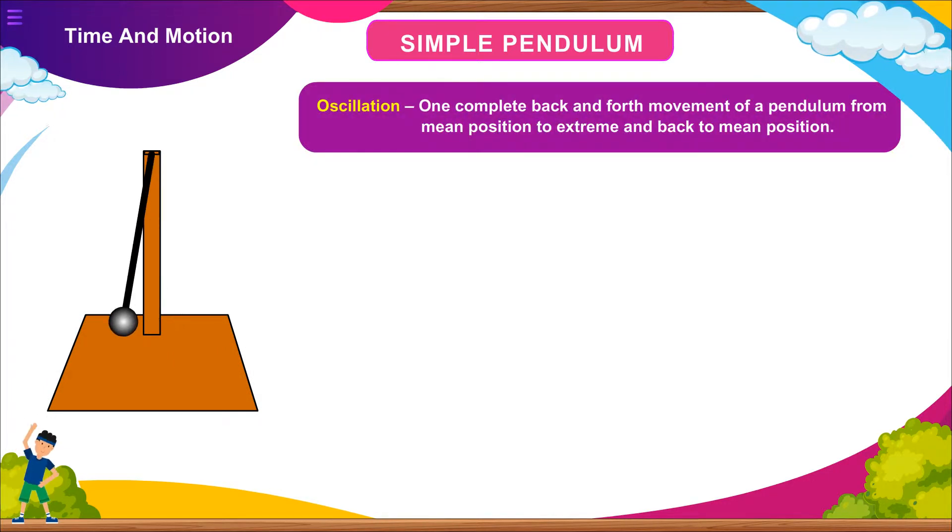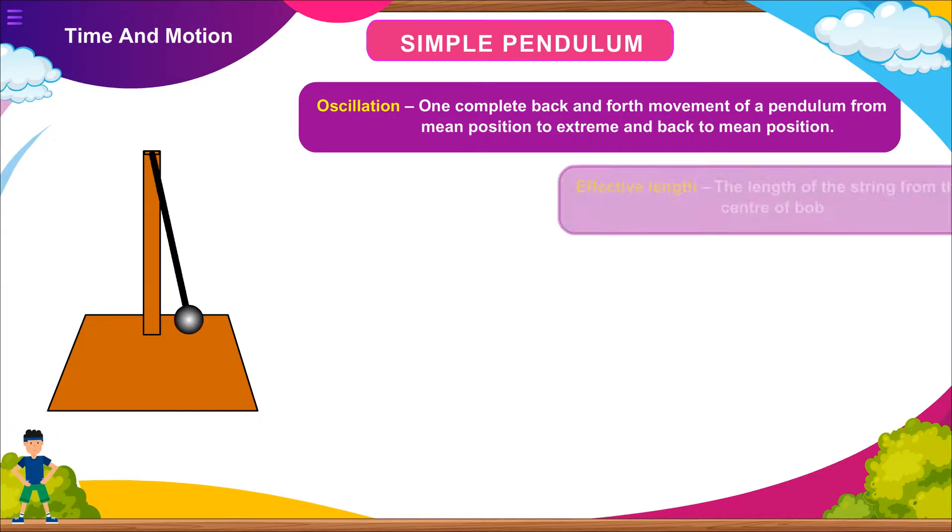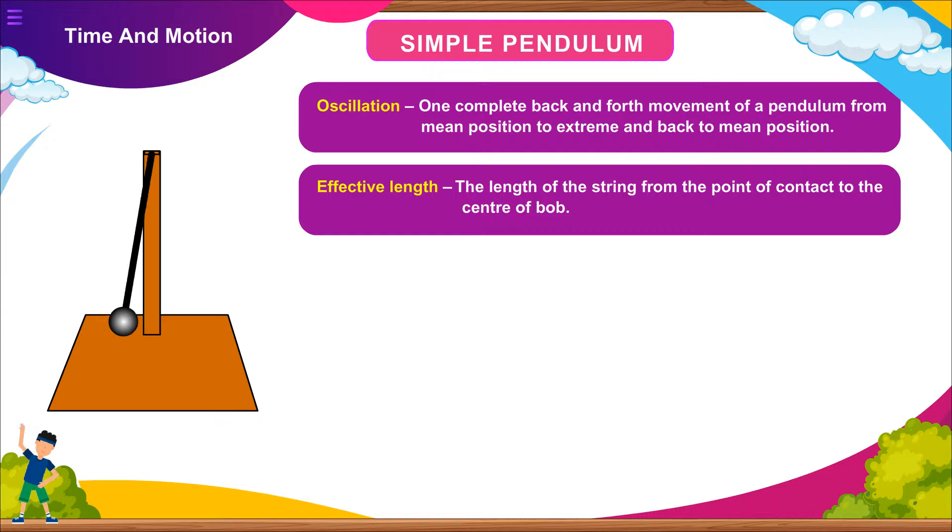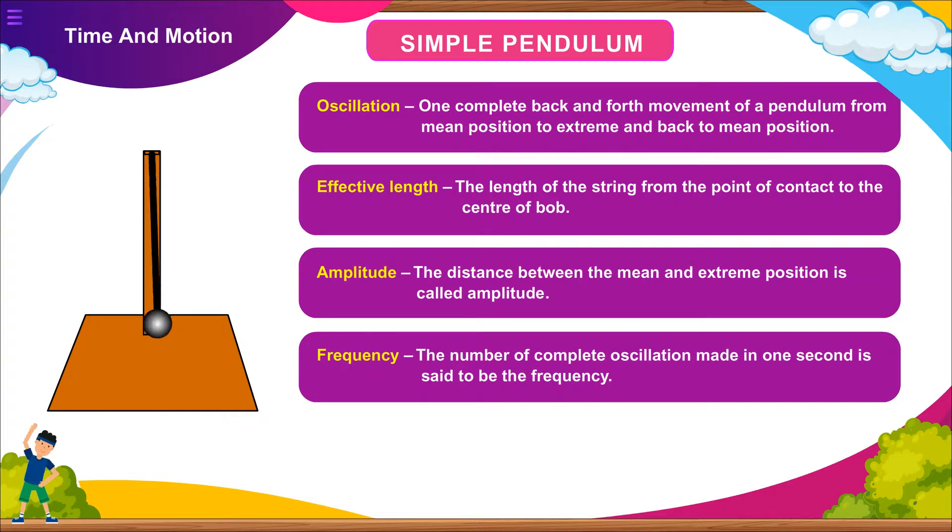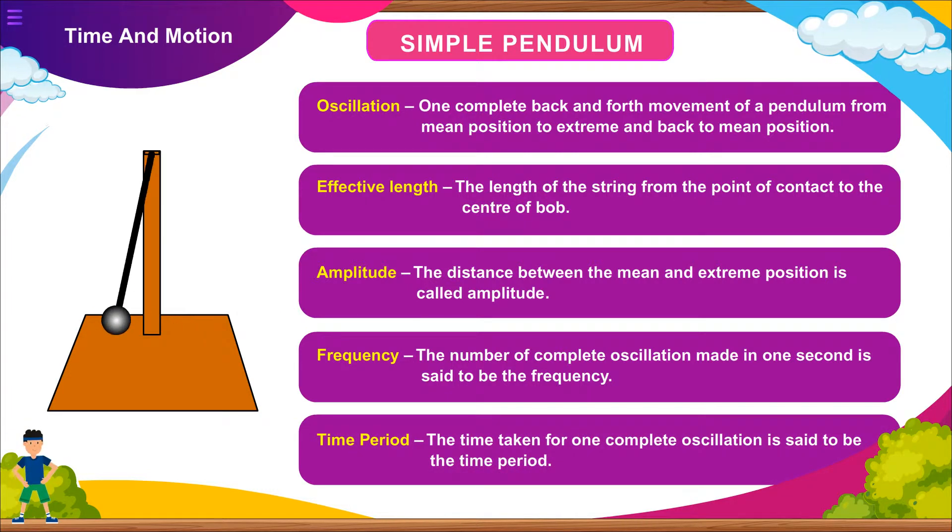Some common terms related to a simple pendulum: Oscillation - one complete back and forth movement of a pendulum from mean position to extreme and back to mean position. Effective length - the length of the string from the point of contact to the center of bob. Amplitude - the distance between the mean and extreme position. Frequency - the number of complete oscillations made in one second. Time period - the time taken for one complete oscillation.